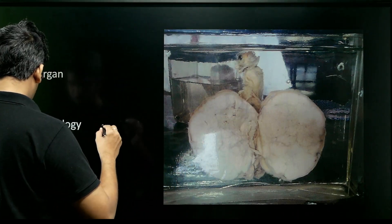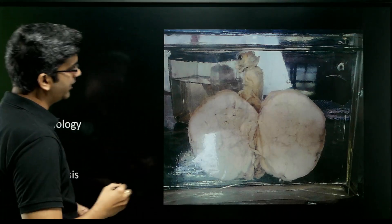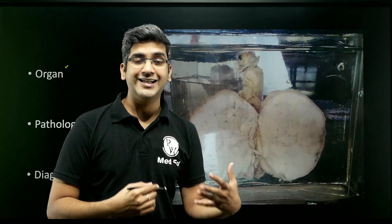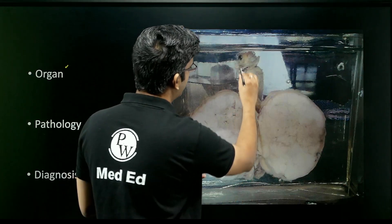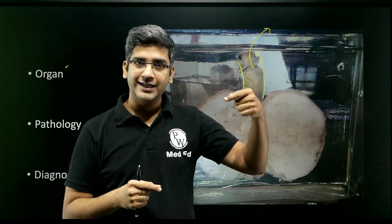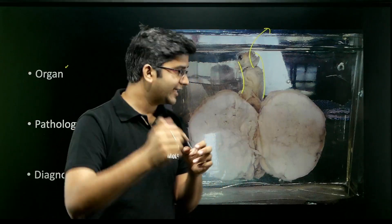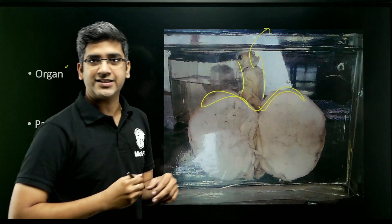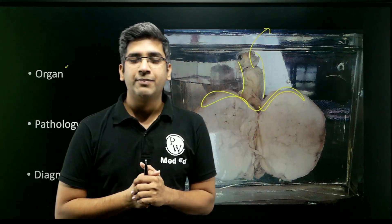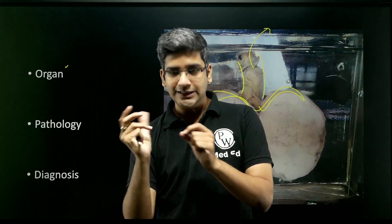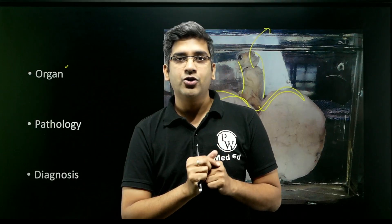Here's the first specimen. The first question is: what is the organ? I can say it's a round to oval-shaped organ attached to a long structure. I presume that this could be the overlying epididymis and the spermatic cord. The epididymis will generally be above the testis, and I presume this entire thing is testicular parenchyma — a cut-open specimen of a testis. I can identify it by the epididymis overlying and the elongated spermatic cord attached.